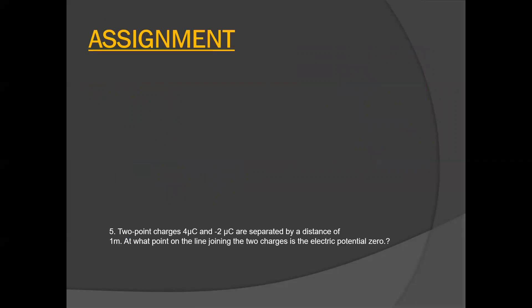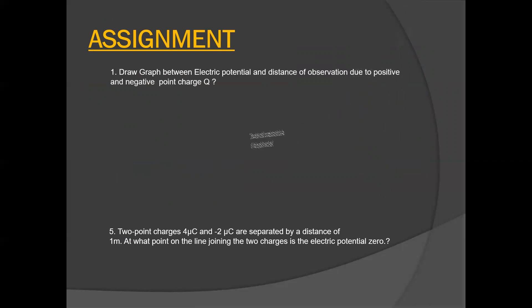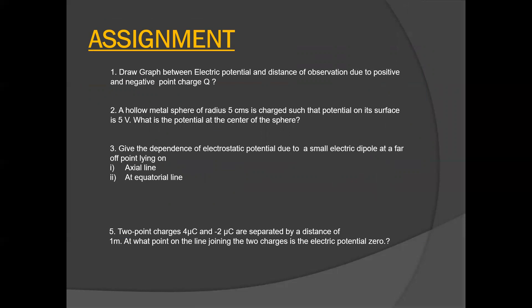Now we come to assignment questions. Question 1: Draw a graph between electric potential and distance of observation due to positive and negative point charge q. We have already discussed this in the theory part. The graph lies in the first quadrant for positive charge and the fourth quadrant for negative charge. Question 2: A hollow metallic sphere of radius 5 cm is charged such that the potential on its surface is 5 Volt. Find the potential at the center. From the center to the surface, the potential remains the same, so its value is 5 Volt.